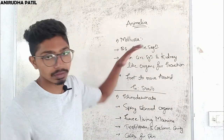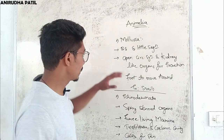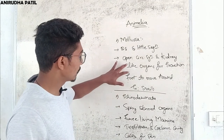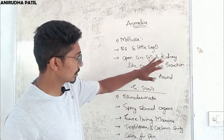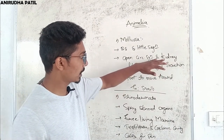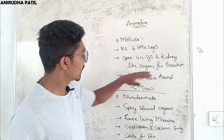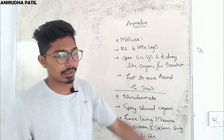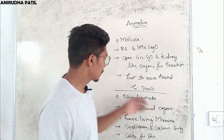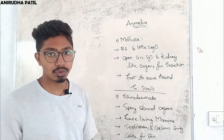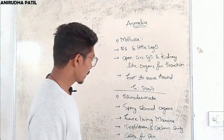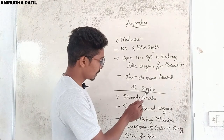Next is Mollusca. The body is bilaterally symmetrical with little segmentation, and they also have an open circulatory system. Additionally, kidney-like organs are found here for excretion. They have a foot to move around. An example is snails.